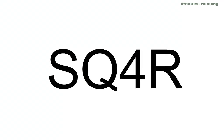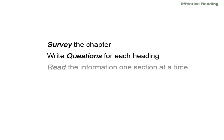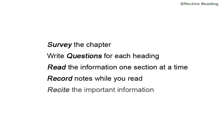SQ4R — what does that mean? It's an acronym for the steps to effectively read and understand text: survey the section or chapter, write questions for each heading and subheading, read the information one section at a time, record important information by taking notes, recite the information out loud, and review the information learned in that section.